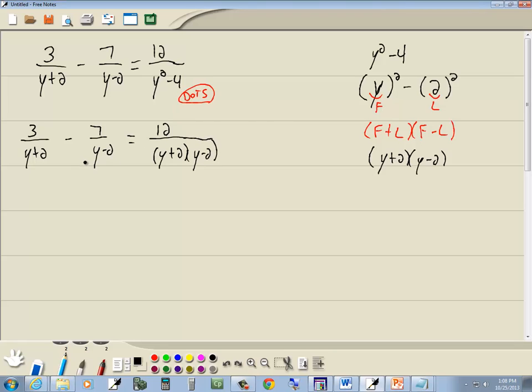Step 2 in solving rational equations is to figure out the LCM of all your denominators and multiply everything by it. So I'll start with my first factor, the y plus 2.